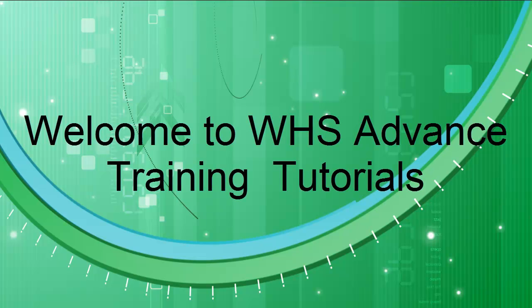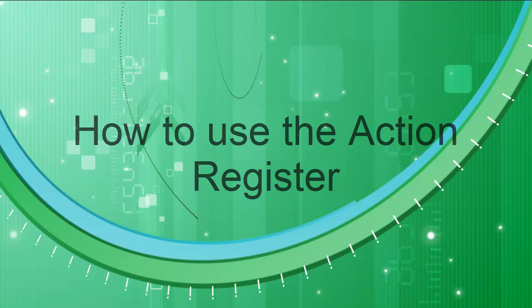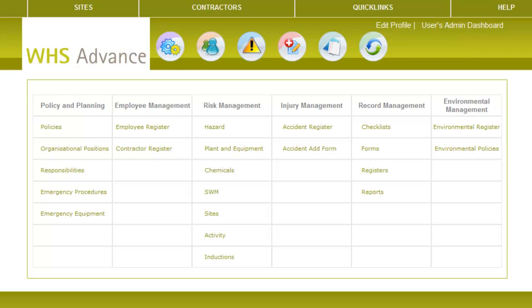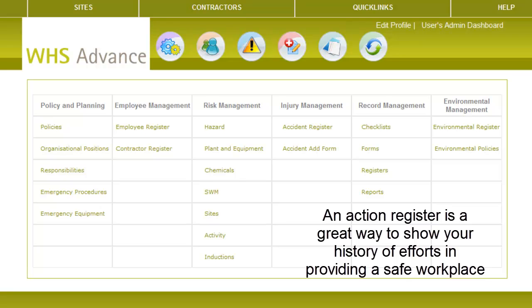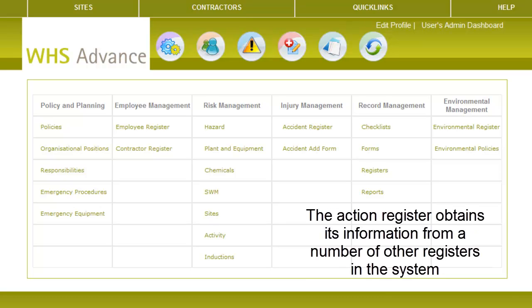Welcome to WHS Training Tutorials. In this tutorial you will learn how to use the Action Register. The Action Register is a register to show your history of efforts in relation to providing a safe workplace. This register obtains its information from a number of sources in the WHS Advanced System.